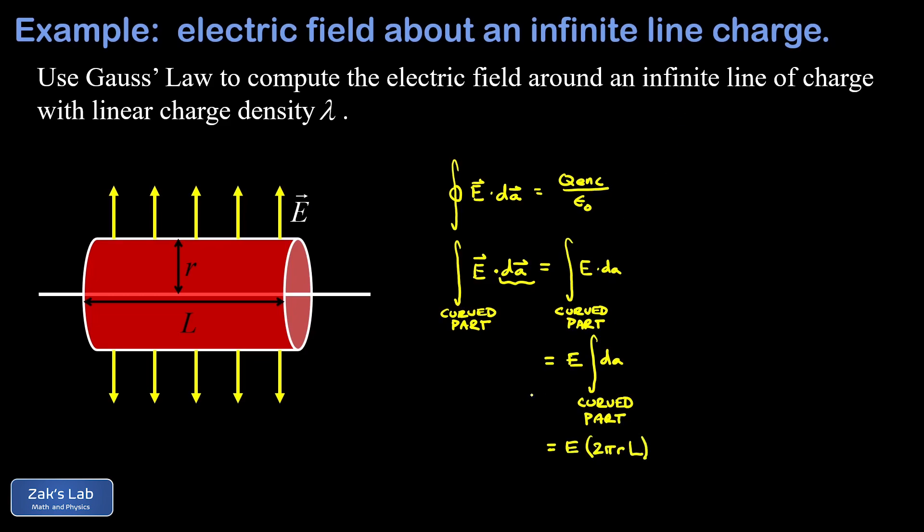So Gauss's law says that that total electric flux is equal to the enclosed charge over epsilon zero. Now we need to find a way to express the enclosed charge inside this closed cylindrical Gaussian surface.